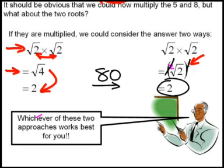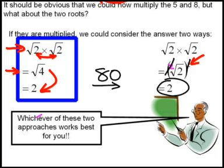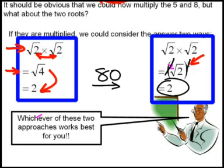Now whichever of these approaches, either this one when you multiply the two roots or alternatively that one when you multiply the two roots, both give you exactly the same answer so you can choose whichever one works the best for you.